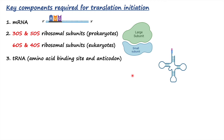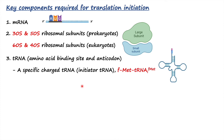Third, we have transfer RNA, which has an amino acid binding site on it. Therefore transfer RNA is able to carry amino acids to the ribosome for protein synthesis. It also has an anticodon, and the sequence of the anticodon is complementary to the sequence of the codon on mRNA.